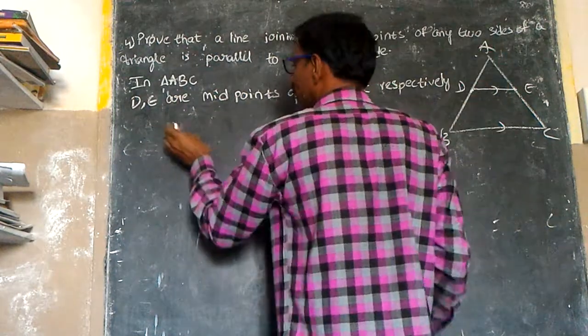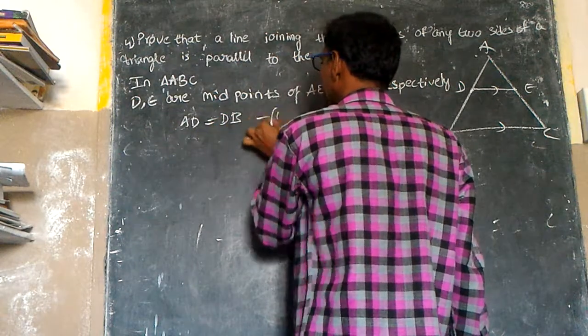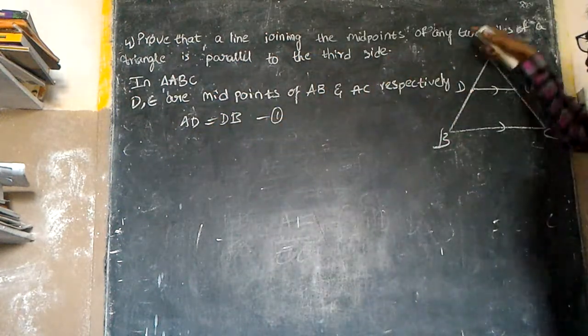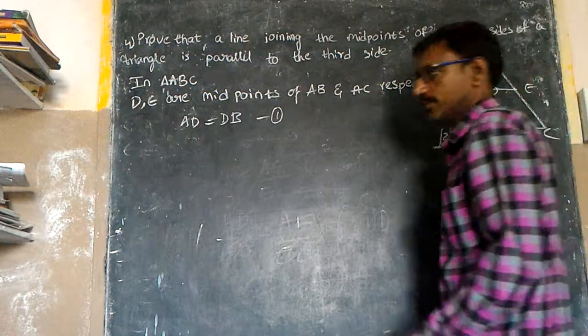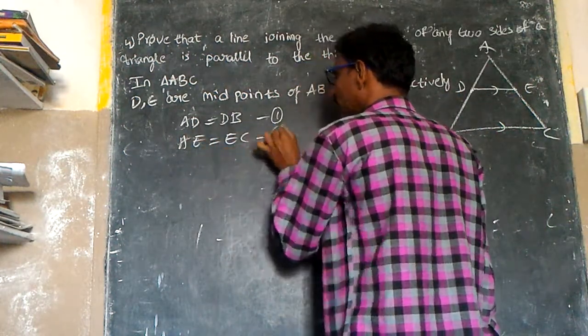So, AD is equal to DB. This is equation 1. AE is equal to EC. Equation 2.